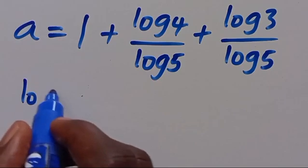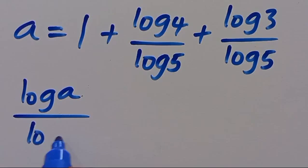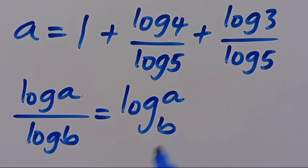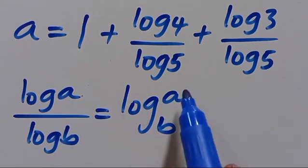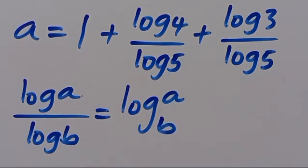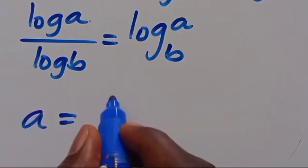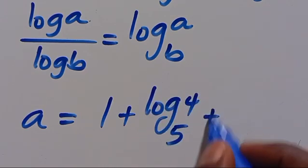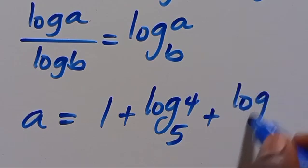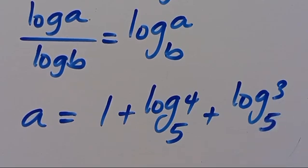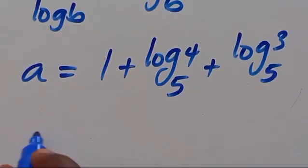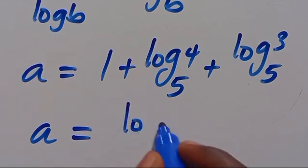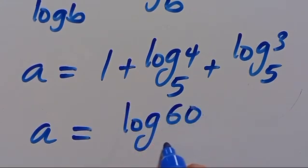Recall that log A divided by log B equals log A in base B. Applying this here, we get A equals 1 plus log base 5 of 4, plus log base 5 of 3. This is also equivalent to A equals log base 5 of 60.